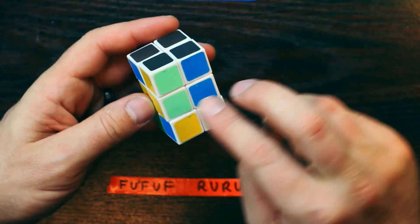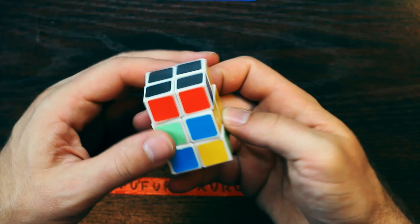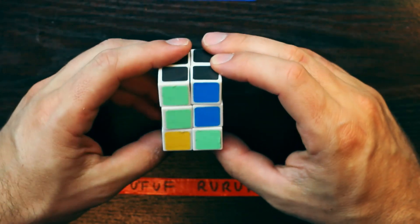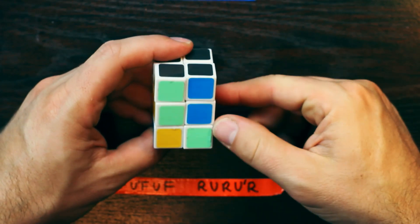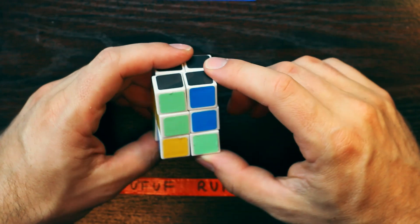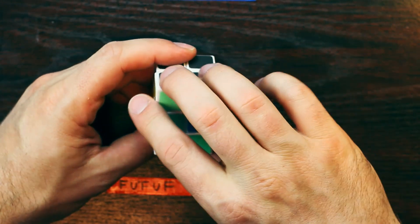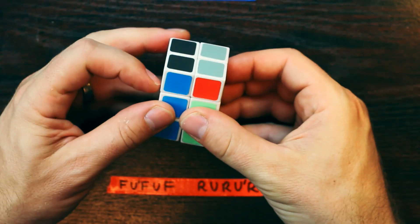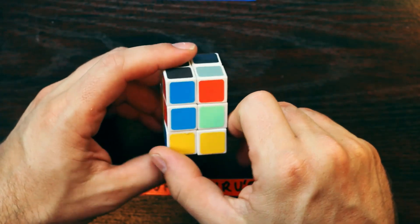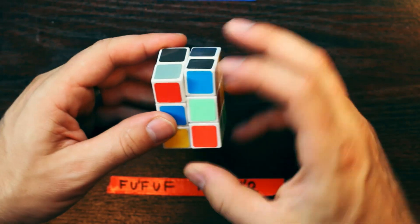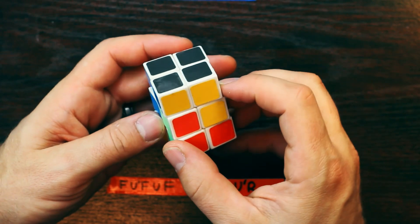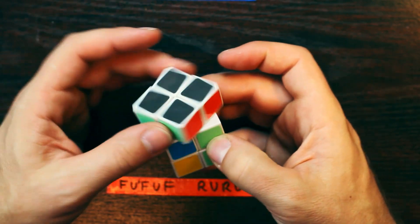Now what you'll notice happened here is we switched these two around. These two are solved, these two are switched around. So that's what that move does. It flips these two pieces around. So if I do it again, it'll flip these back into the right position. So front up front up front. Front up front. Right up right up right. Now those two are switched back into the correct position and that is solved.